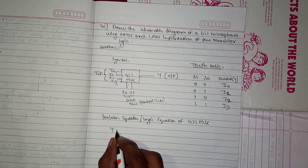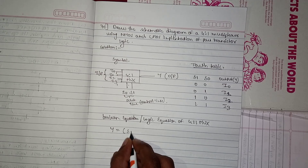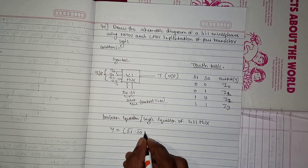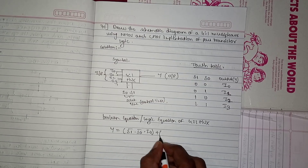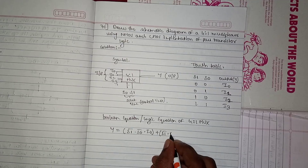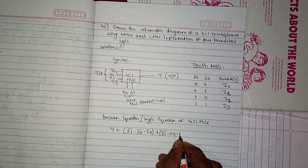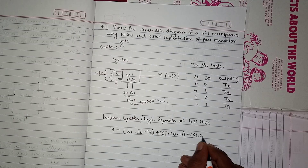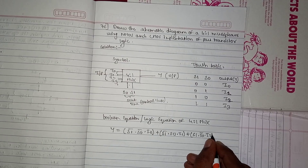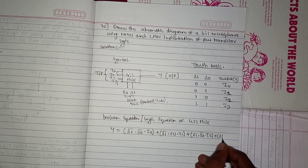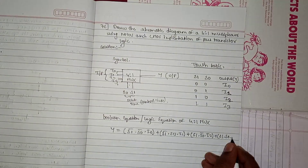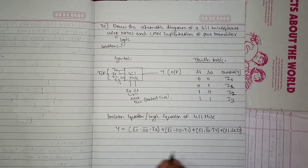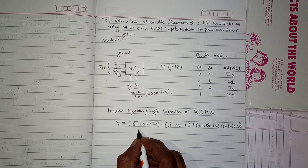The Boolean equation is: Y = S1̄·S0̄·i0 + S1̄·S0·i1 + S1·S0̄·i2 + S1·S0·i3. This is the Boolean equation, and through this only we will draw the schematic.